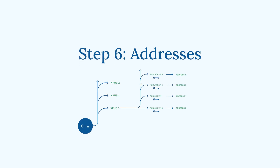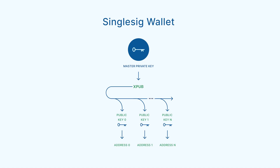Step 6: Addresses. An address is a string of letters and numbers that can be shared with other people to receive Bitcoin from them. We've done a video all about addresses, which you can find using the card on your screen or the link in the video description. In this diagram, we see how the addresses for a single-sig wallet are created. One master private key produces an XPub, and the XPub produces plain public keys, each of which can build an address.